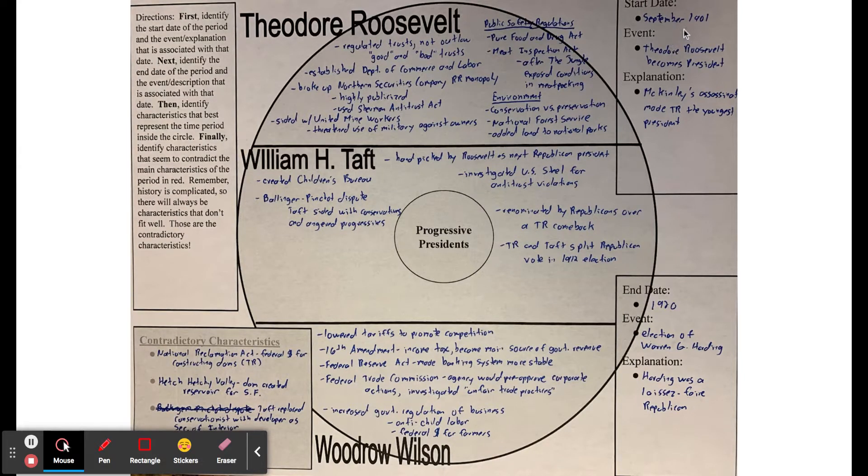This progressive era for presidents begins when Theodore Roosevelt takes over as president after McKinley is assassinated. Theodore Roosevelt becomes president and becomes the youngest president. He's this young energetic guy who came from New York. He was a former governor of New York, well known for some of his exploits during the Spanish-American War, and he has this big personality.